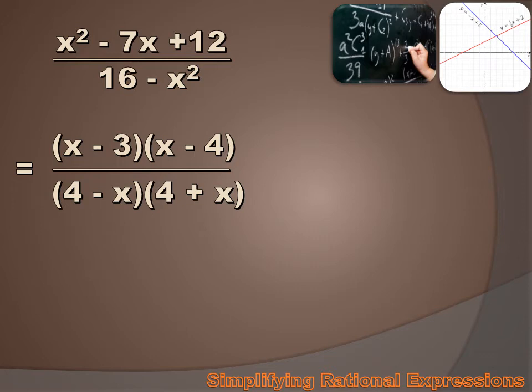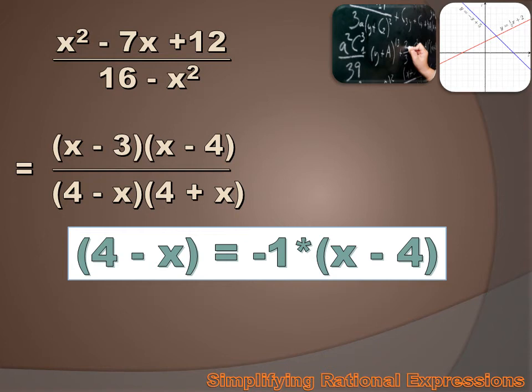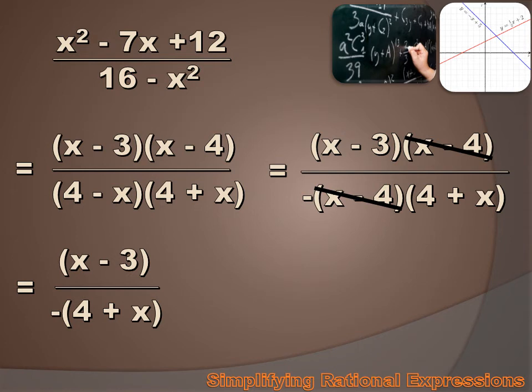Well what I'm going to do is try to recognize opposites. 4 minus x is the opposite of x minus 4. If I multiply minus 1 times x minus 4, I get 4 minus x. It's the opposite. And because minus 1 times x minus 4 equals 4 minus x, I can substitute it for 4 minus x. And when I do, my expression reads x minus 3 times x minus 4 over negative x minus 4 times 4 plus x. Now I've got a common factor in my denominator and my numerator and I can eliminate those.